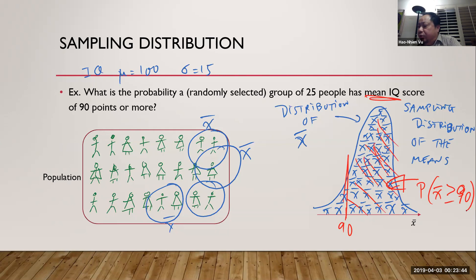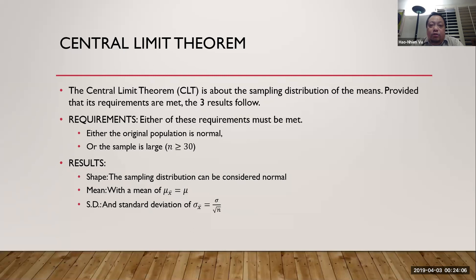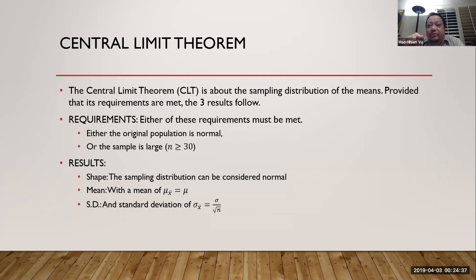All of this leads us to the central limit theorem. The CLT is a result about the sampling distribution of the means. It says that provided the requirements are met, three results follow. The requirements are: either the original population is normal, or the sample is large — where we consider anything of 30 or more to be large. This is an either/or requirement — you only need one of them.